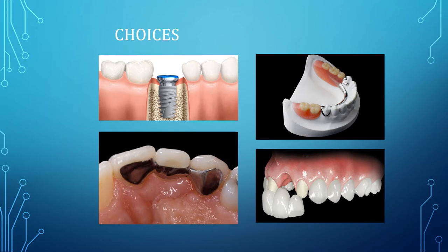If there is inadequate bone quality or insufficient residual ridge support, the next option is a fixed partial denture, applicable only if the abutment teeth are sound enough. If not, a removable partial denture is suggested. When the patient is not comfortable with preparation of healthy teeth, resin-bonded bridges can be considered. If cost is a factor, a cast chrome partial denture is the next option.